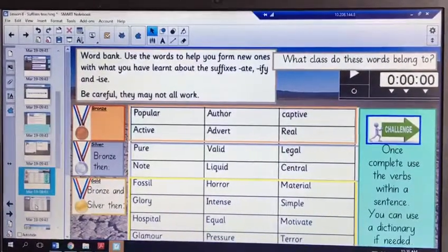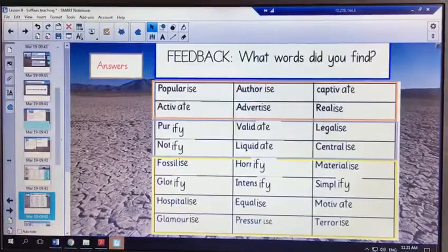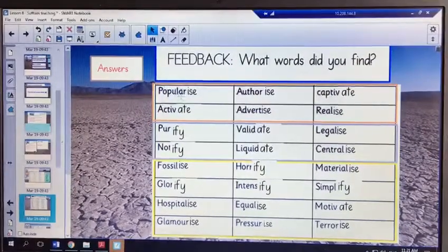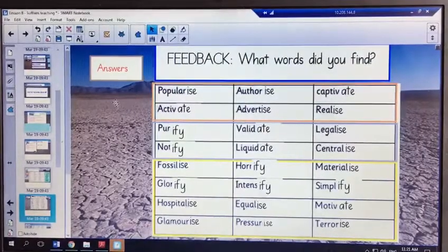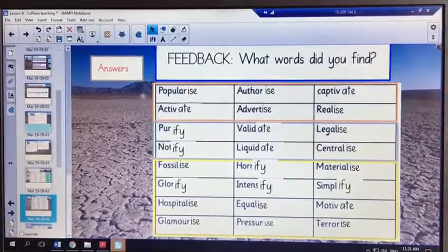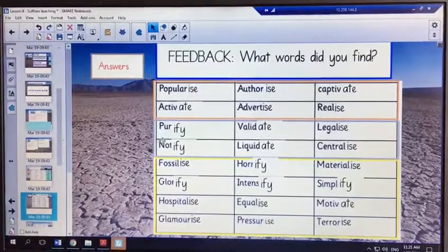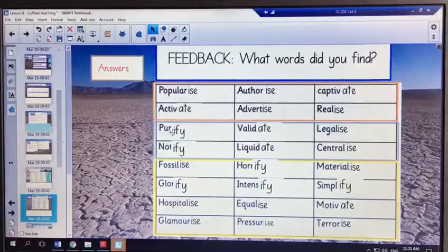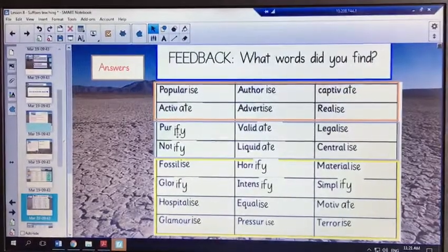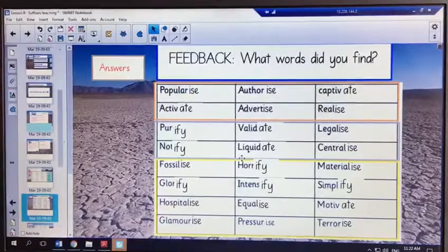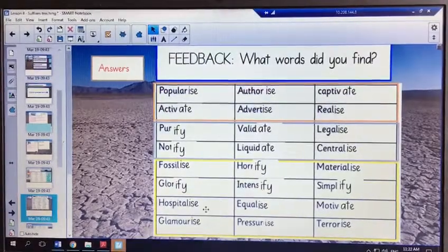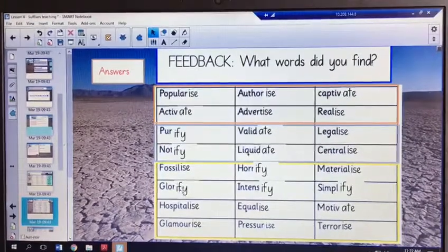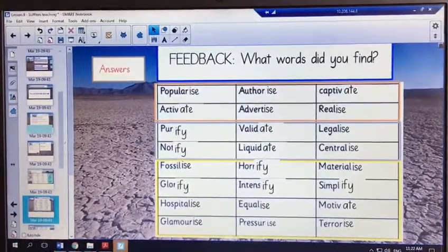Okay. Right, so here are the answers Year 5 for the verbs, the new verbs that we have formed through adding the suffixes. You will notice, for example, that pure, we have replaced the e with an i before adding the suffix. And glory, we have removed the y before adding the suffix. Okay.